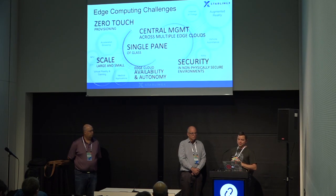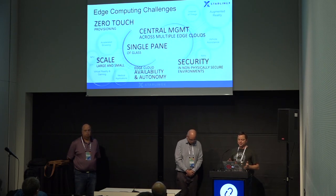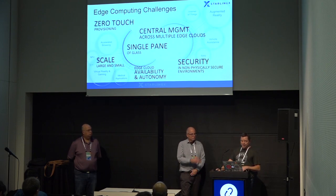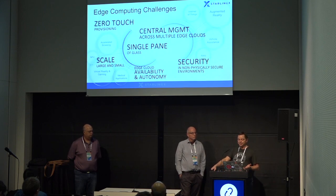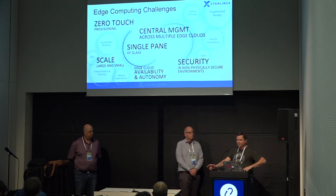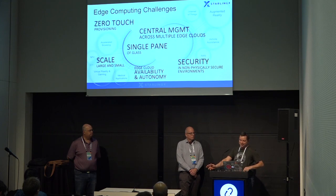Scaling large and small is also a challenge — small is actually harder, being able to shrink your edge cloud solution down to a single server. Edge cloud availability and autonomy: these edge clouds are out in the middle of nowhere, so they must be highly available and able to operate autonomously when connectivity to the central site is lost. Security is also different since these sites aren't in locked data centers.